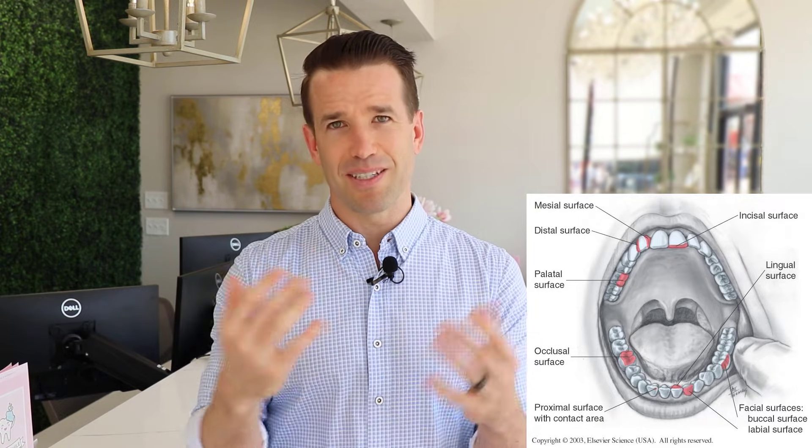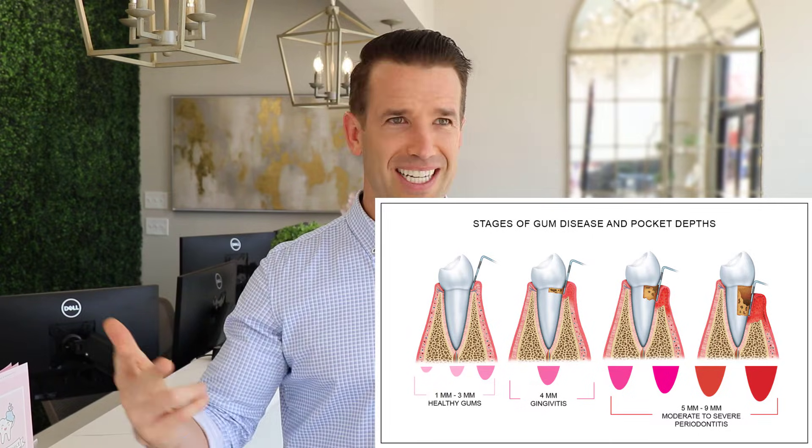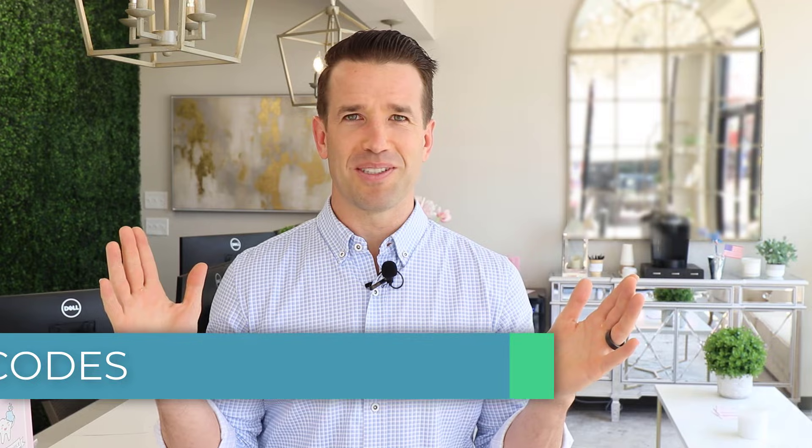So you know quite a bit now — the teeth numbering one through 32, the different sides of the teeth, what they're called: mesial, distal, occlusal, facial, lingual, incisal. You know the difference between a prophy and a deep cleaning, and you know what probing depths are. The last thing I want to touch on is dental codes. This can be a whole week-long conversation, but I want to give you just an overall knowledge. Dental codes are used on every single patient, every single time, so you're going to use dental codes constantly.